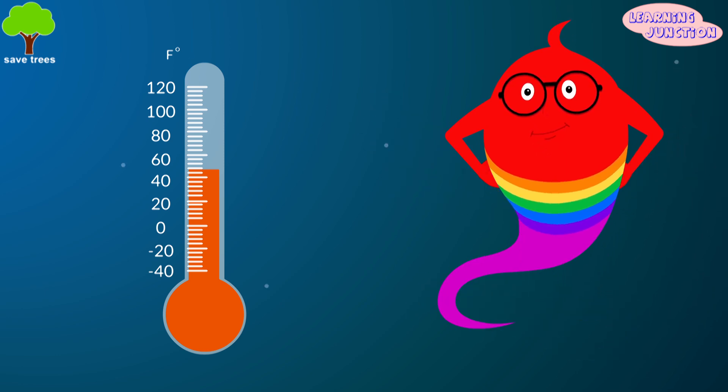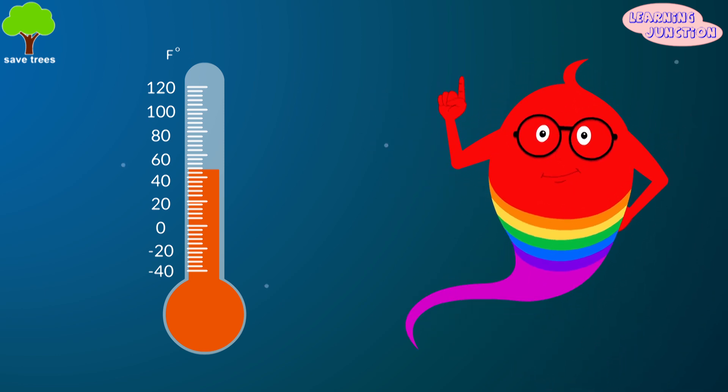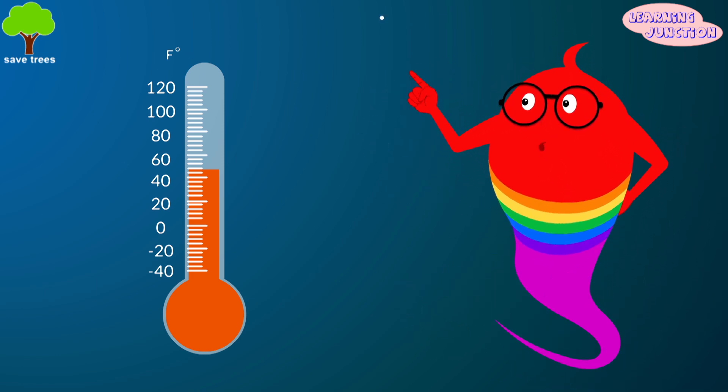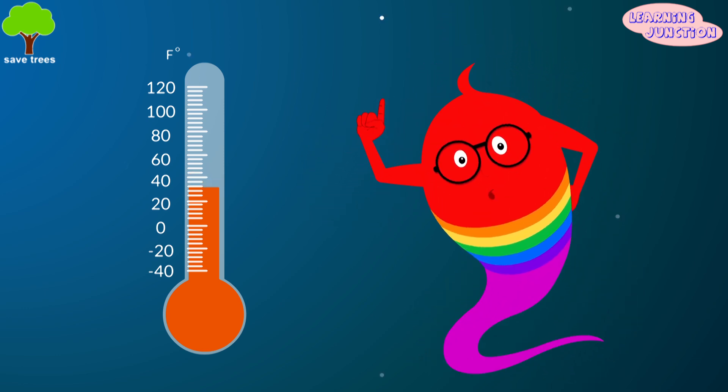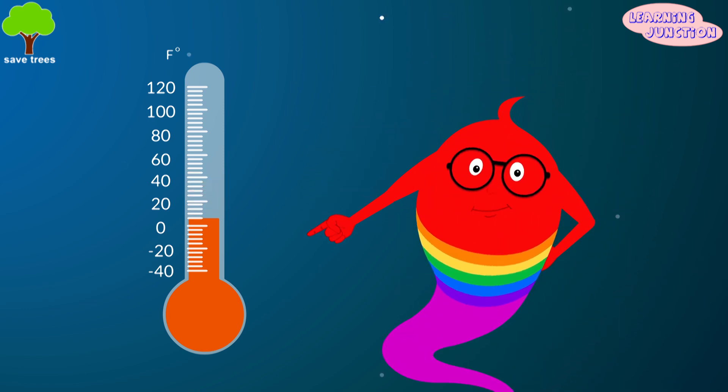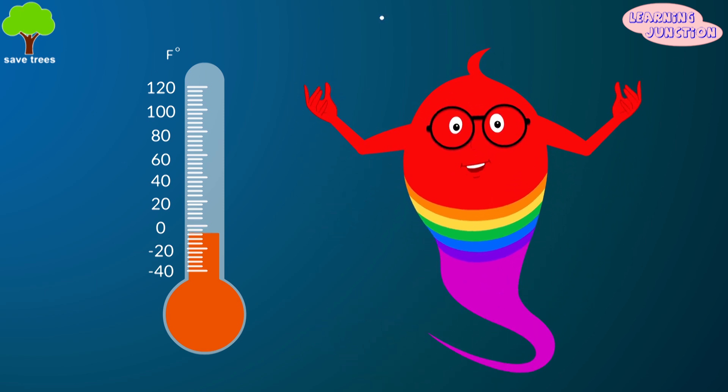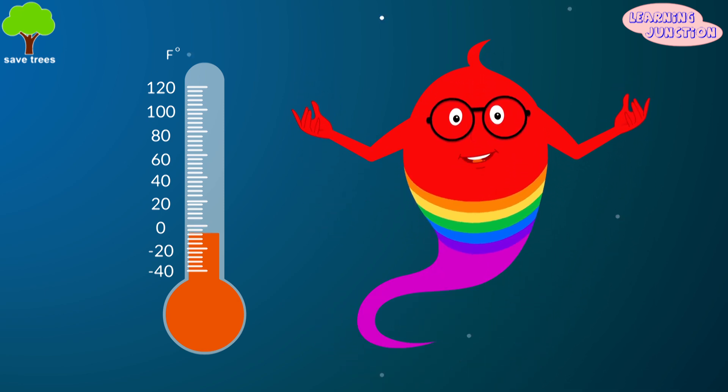Scientists say that without the greenhouse effect, the average temperature of Earth would drop from 14 degrees Celsius, or 57 degrees Fahrenheit, to as low as minus 18 degrees Celsius, or minus 0.4 degrees Fahrenheit.